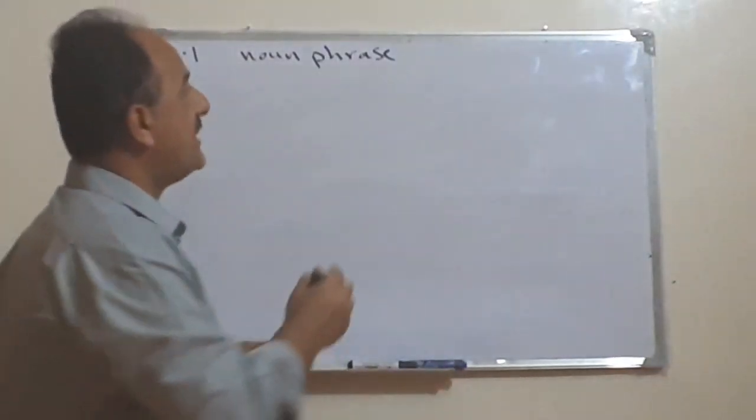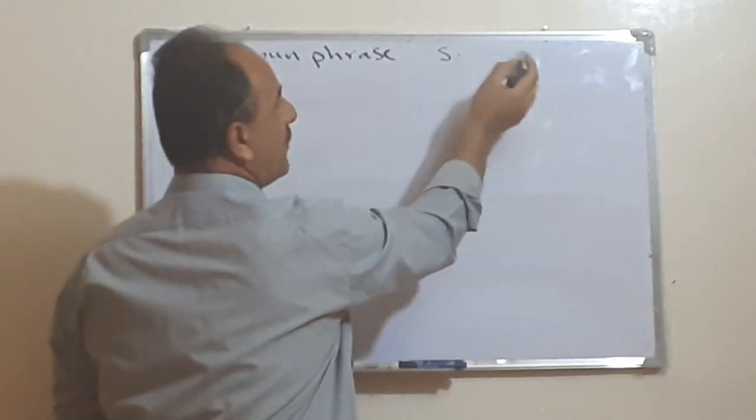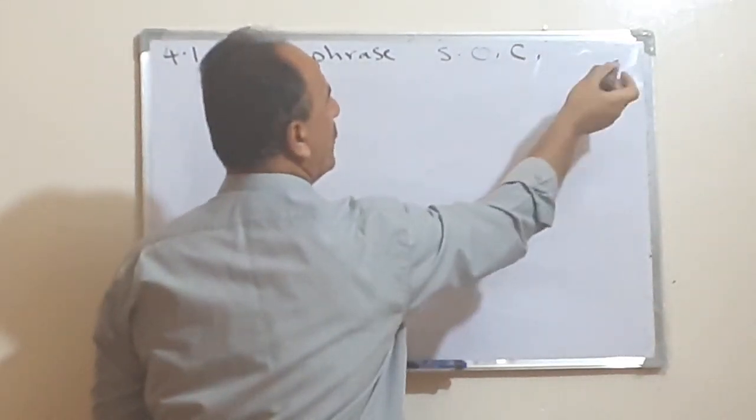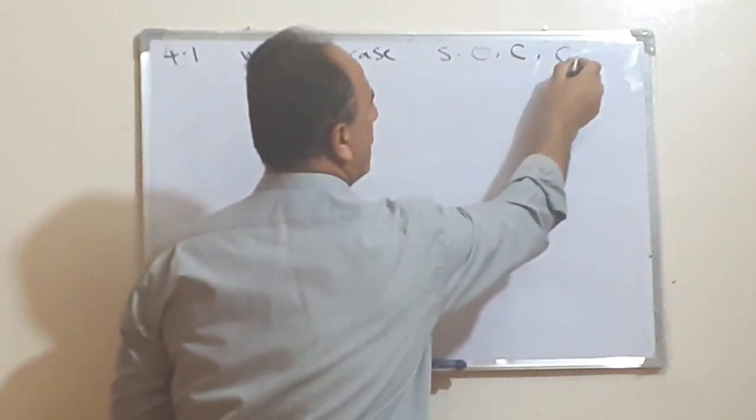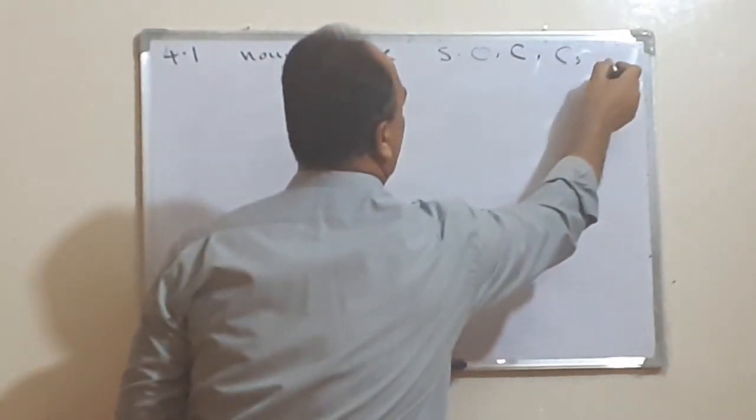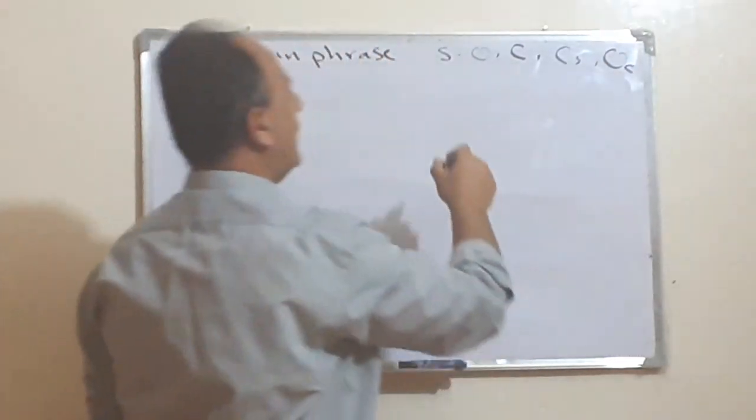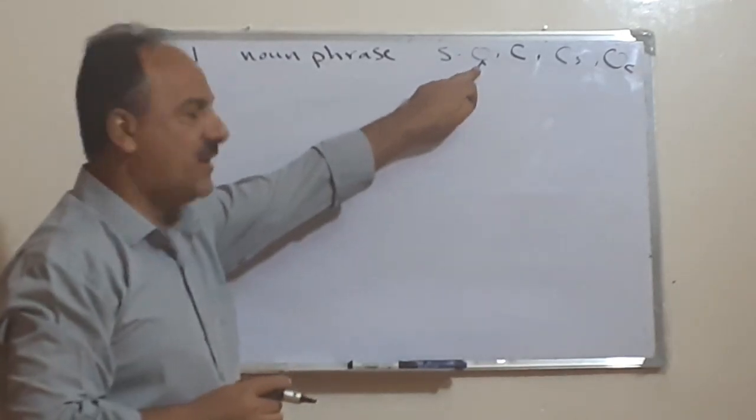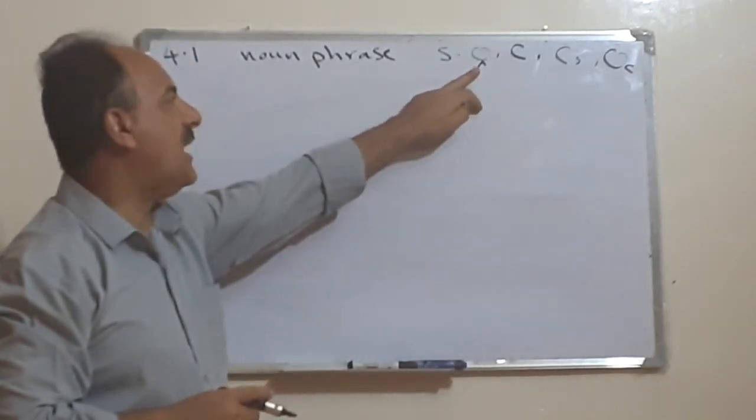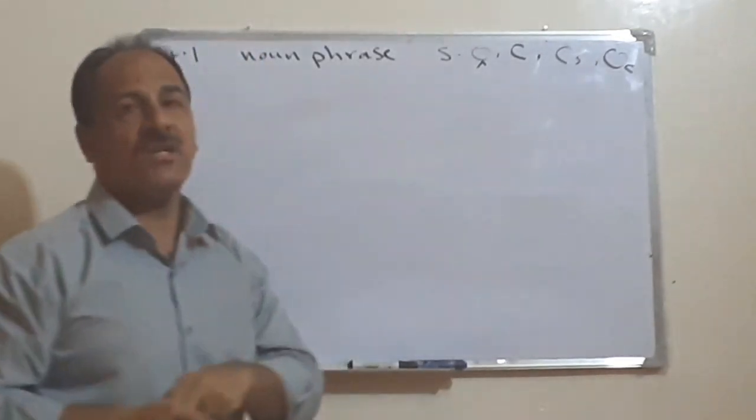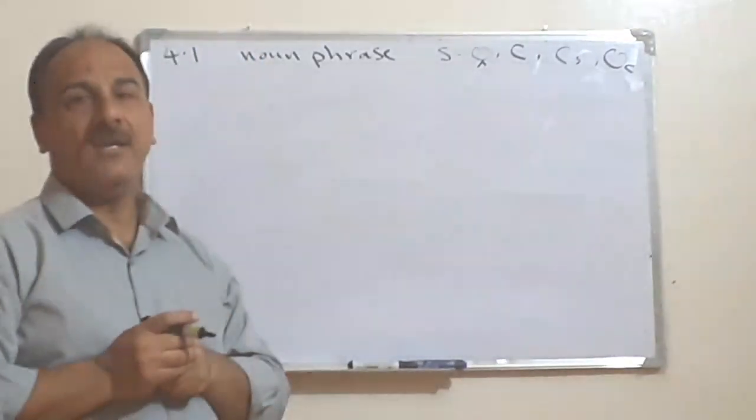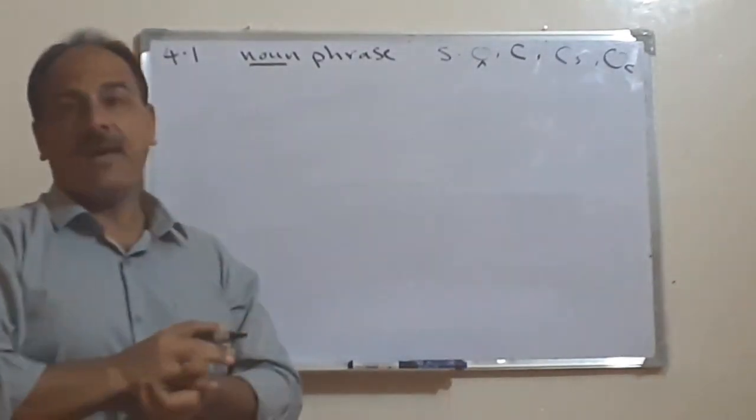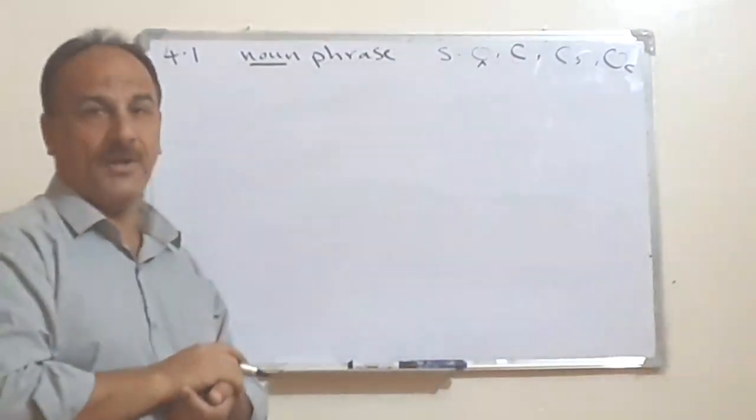It means either we use them in the subject or in the object, or we use them in the complement, or in the subject complement, or object complement. In case of the subject, it could be the first object, indirect, then the indirect. These are the positions that can occupy in the sentence. And if we say a noun, it doesn't mean to have just one word. For example, if we say the man is there.